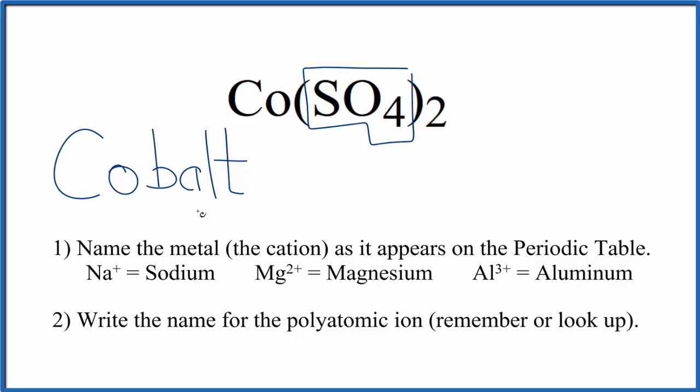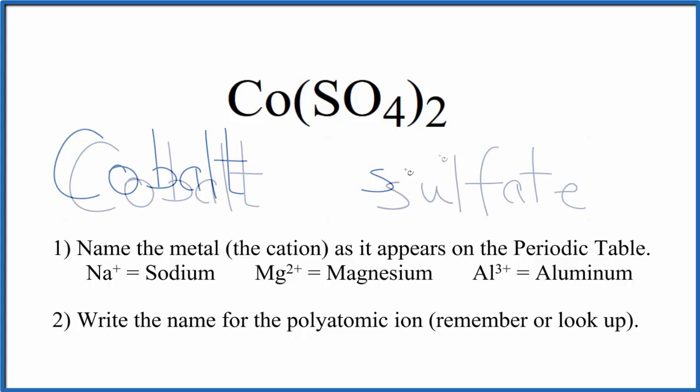It's a good one to remember. So you either remember that SO4 is the sulfate ion, or if you're allowed, you look it up on a table of polyatomic ions. So lowercase s. And so far, we have cobalt sulfate as the name for Co(SO4)2.